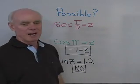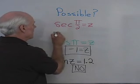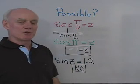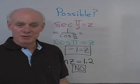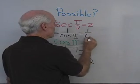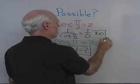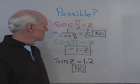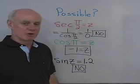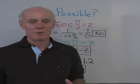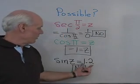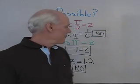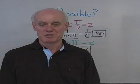What about secant of π/2? Secant is the reciprocal of cosine, and cosine of π/2 is 0, so secant of π/2 is 1 over 0 — undefined. There is no value of z for which that is true. It's very helpful to know that sine and cosine are always between −1 and 1. If you get a value like 1.2 or −3, you know you've made a mistake somewhere — those are impossible for sine and cosine. That's a look at problems involving the unit circle and values of the trig functions.